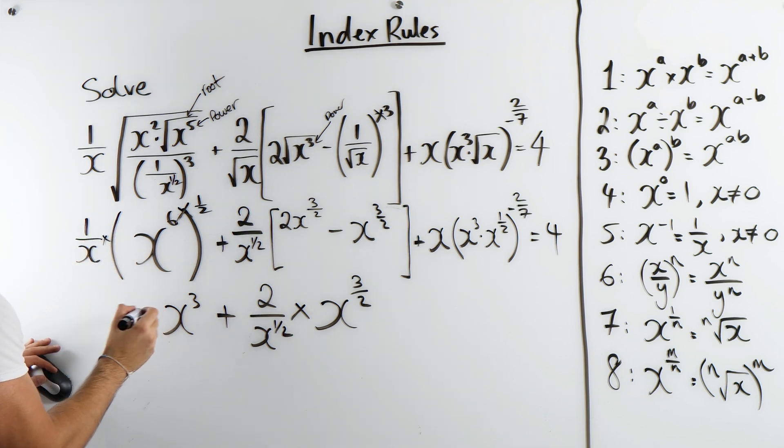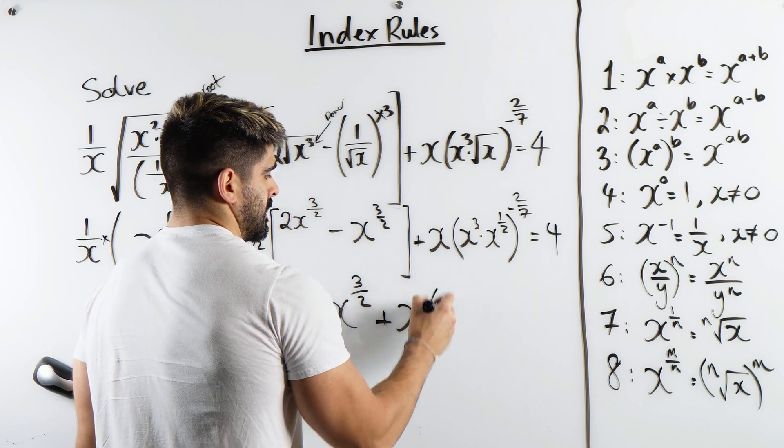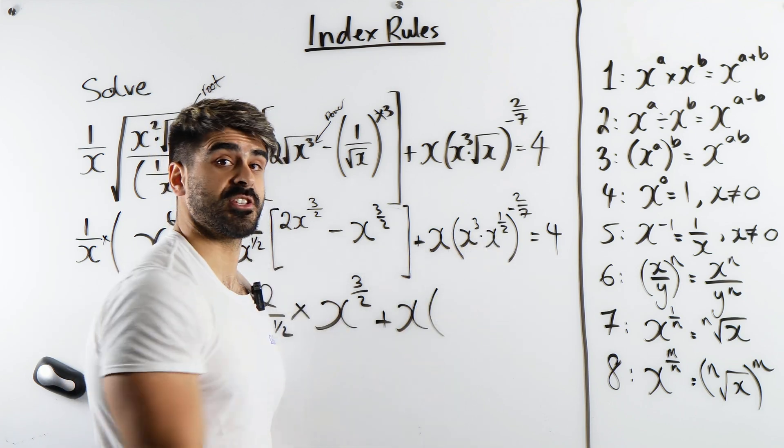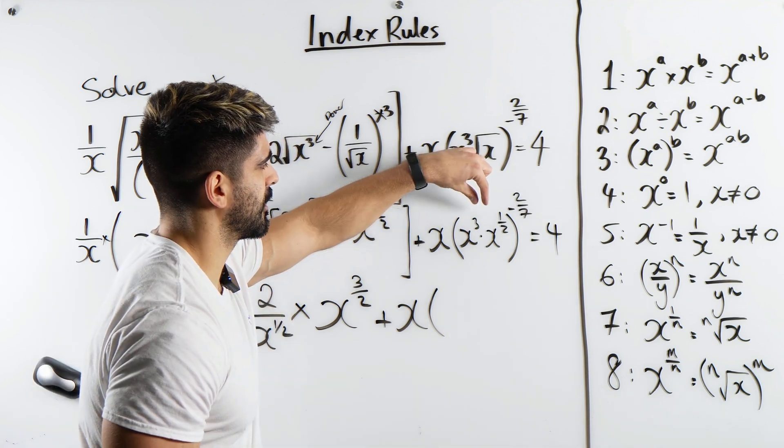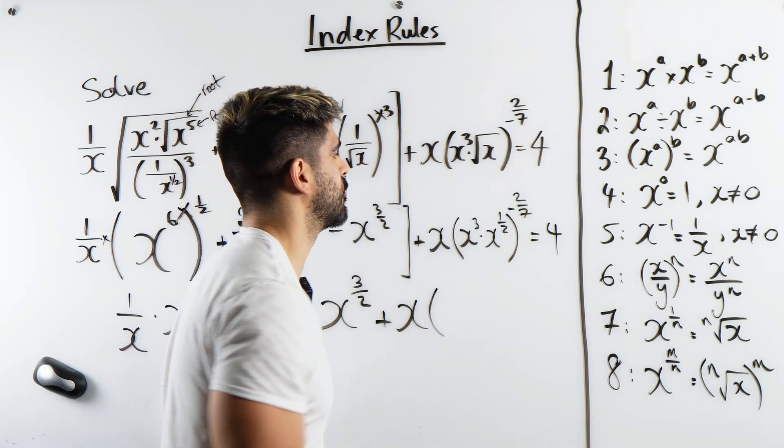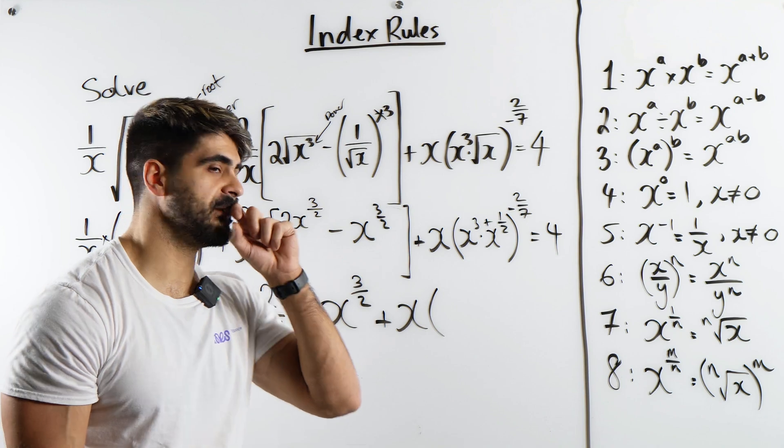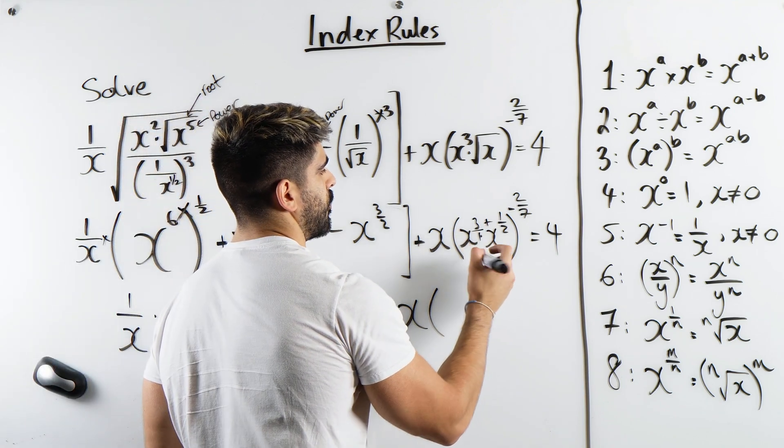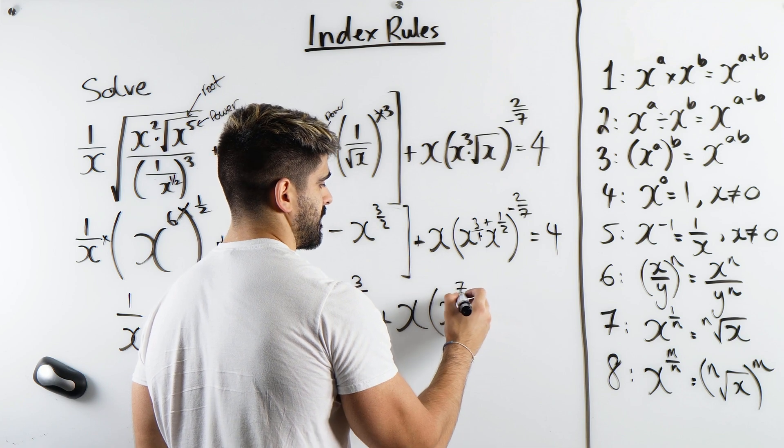Then we are multiplying it by 1 over x. What's going on here? We have x cubed times x to the power of a half. Now, here we're multiplying two numbers with the same base. We're adding the powers. This is 3 over 2. This is 3 and a half. We're doing 3 plus a half. We're using rule 1. But my recommendation to you guys is not to write 3.5. Keep it as a fraction. So this is 3 over 1. 6 plus 1 is 7. So x to the power of 7 over 2.